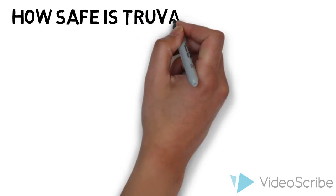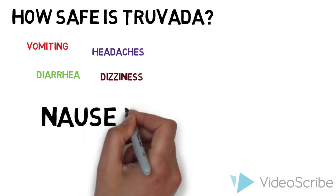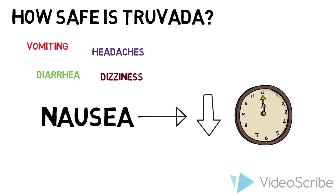Truvada has been used since 2004 in other treatments, so its effects are well documented. When using Truvada for PrEP, it can have side effects including vomiting, diarrhea, headaches, and dizziness. The most common side effect of Truvada is nausea. However, this symptom has been observed to lessen over time.